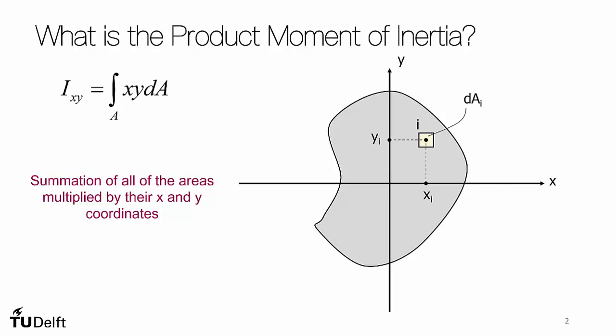The principal axes is a particular axes where this product moment of inertia is equal to zero. So when does this occur?